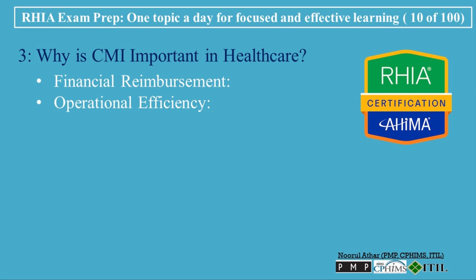Operational Efficiency: Understanding CMI helps hospitals and healthcare providers optimize resource allocation. By knowing the complexity of the cases they handle, they can better manage staffing, equipment, and other resources to meet patient needs efficiently. Quality of Care: A higher CMI often correlates with more specialized and intensive care. Tracking CMI helps healthcare organizations assess the level of care they're providing and identify areas where they may need to enhance services or invest in additional resources.